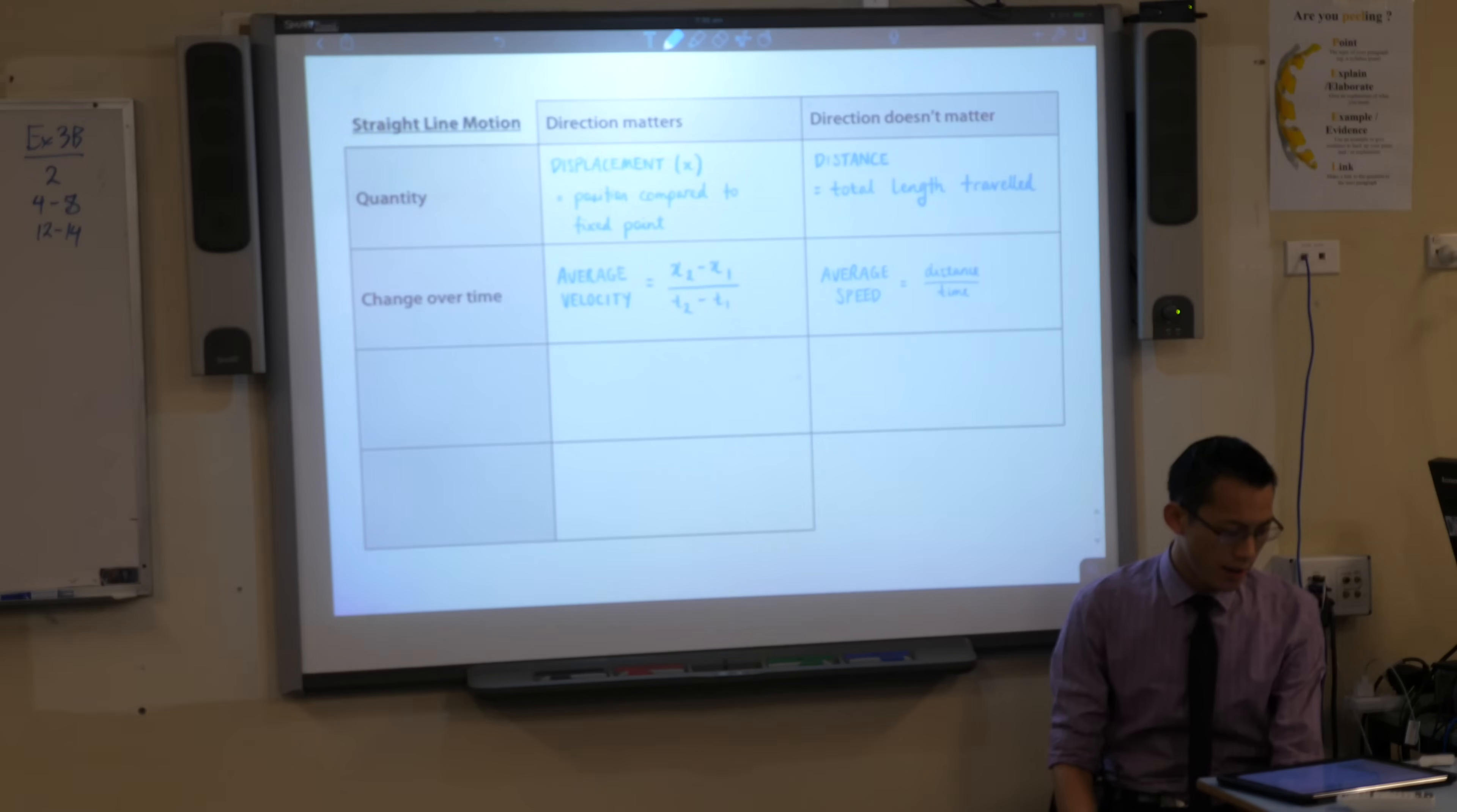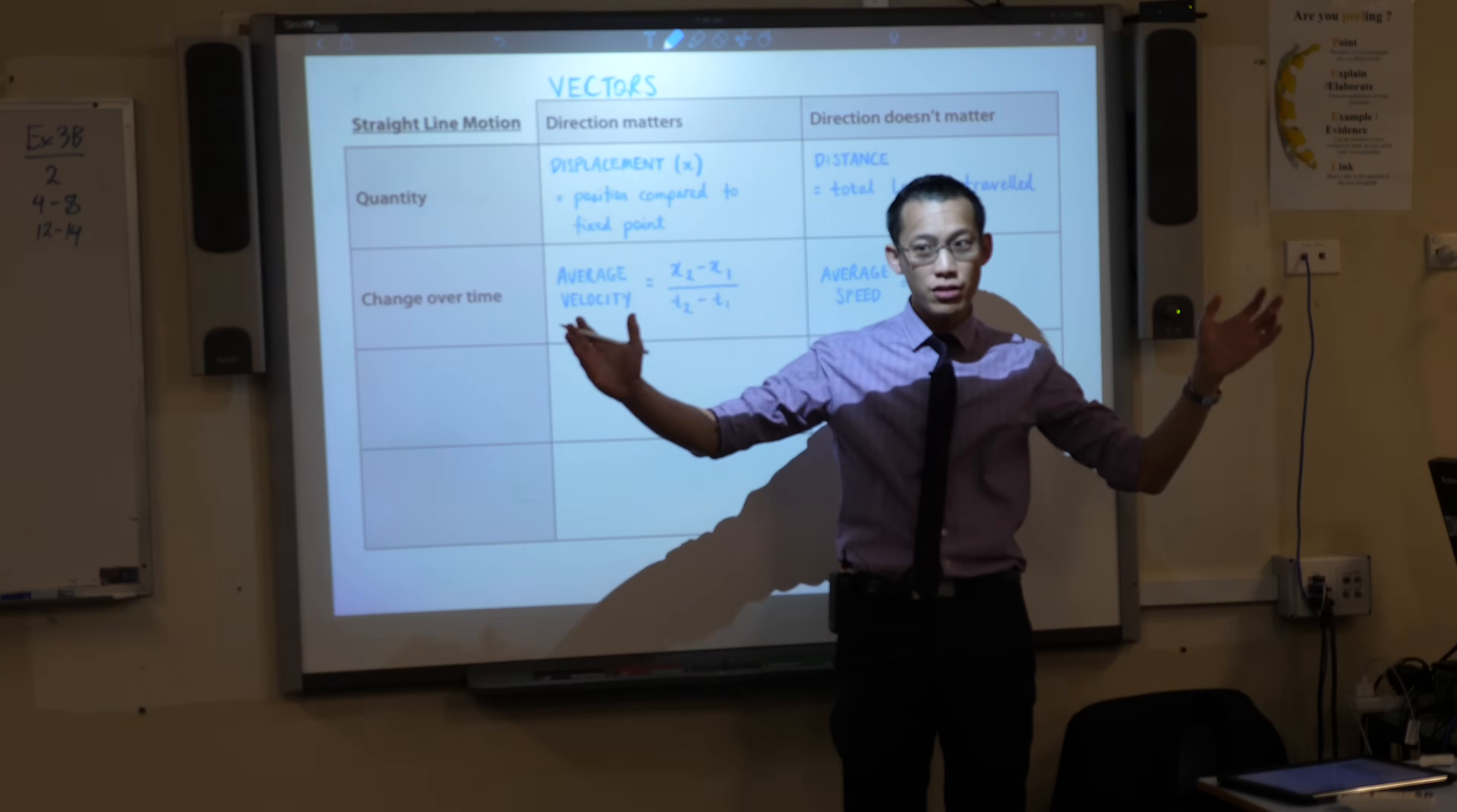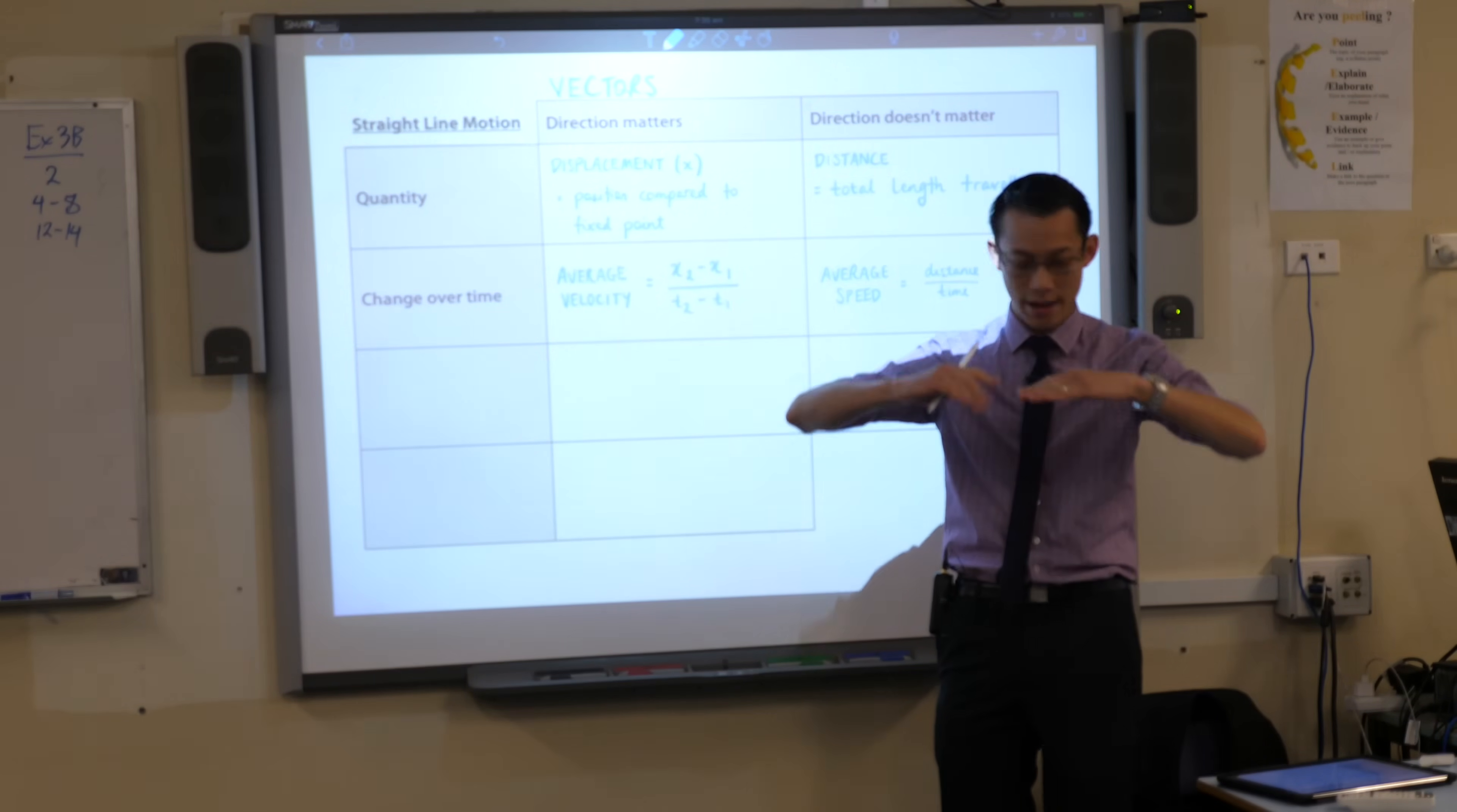When we talk about direction mattering, what we're talking about is quantities that are vectors. Vectors are things which have a magnitude, a size, and they also have a direction like positive or negative. For us, because we're only in a straight line, you can only go one way or its opposite because that's all you've got on the line.